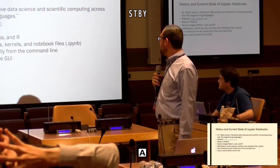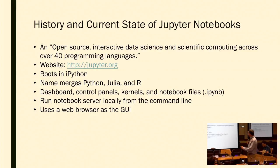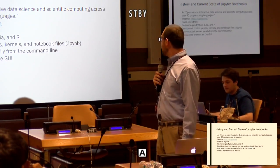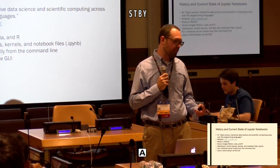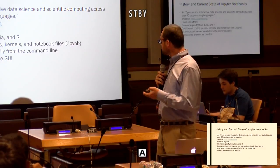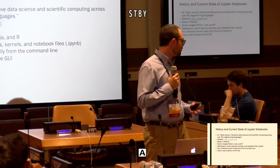Jupyter Notebooks bill themselves as an open-source interactive data science and scientific computing platform across 40 programming languages. The website is jupyter.org. Some of you have probably done something with IPython or IPython Notebooks — that's really the roots of this project. A group working on it rebranded it as Jupyter Notebooks by taking the names Python, Julia, and R and pushing those together: Jupyter. What you get is a main dashboard with control panels, things called kernels, and notebook files. They use a web browser as the graphical user interface, and you can run a notebook server from the command line — from Terminal on a Mac — and then open up this GUI where you can write Python in an interactive, graphical context.